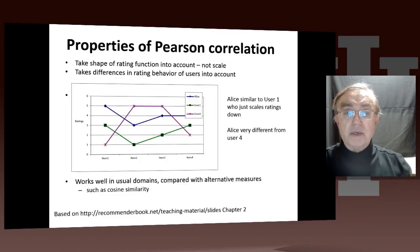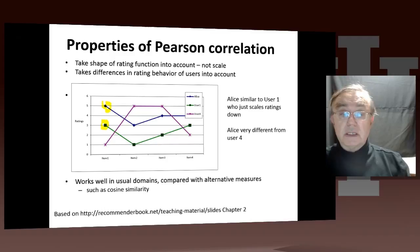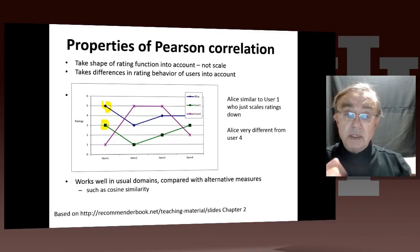If you do that, you'll find that here we have Alice, which is blue. We have user one, who's this green one, who's actually pretty similar to Alice in shape and so has good similarity. User one just happens to be more negative than Alice, so user one just has everything lowered. User four is dramatically different from Alice, totally different shape. We saw that with a -0.79 similarity between user four and Alice.